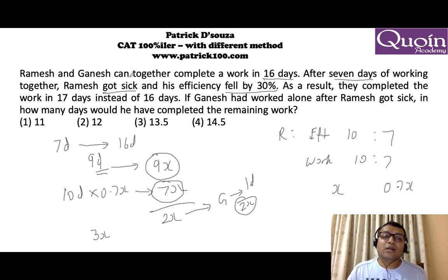When Ramesh stopped working after 7 days, 27x work was left, which will be completed by Ganesh in 27x upon 2x which is 13.5 days because every day he does 2x work. So 27x work he will do in 13.5 days. Third option. You can do this without using x. I used x just for understanding purposes.